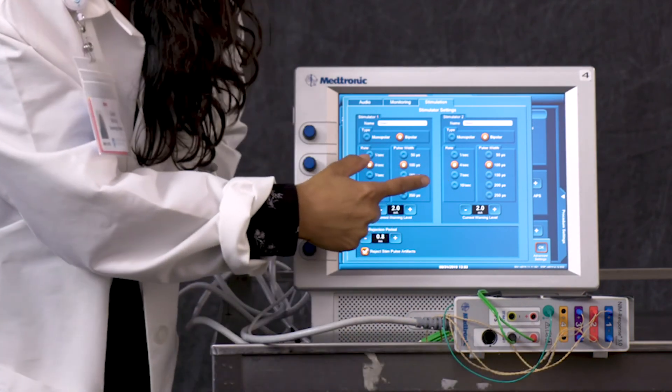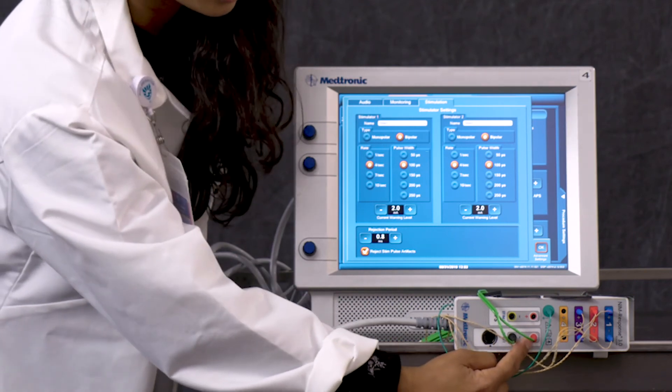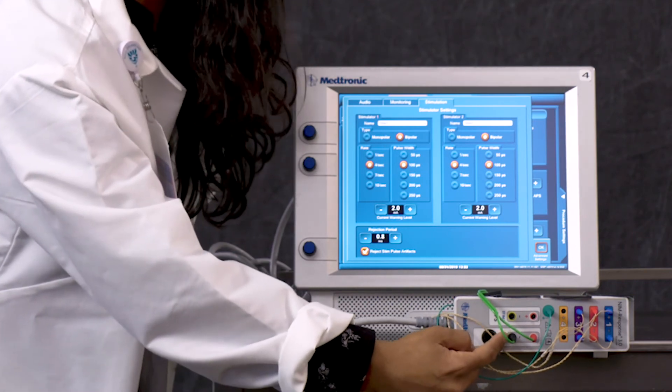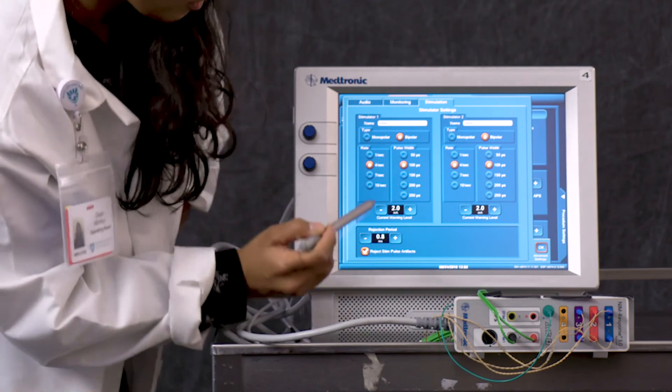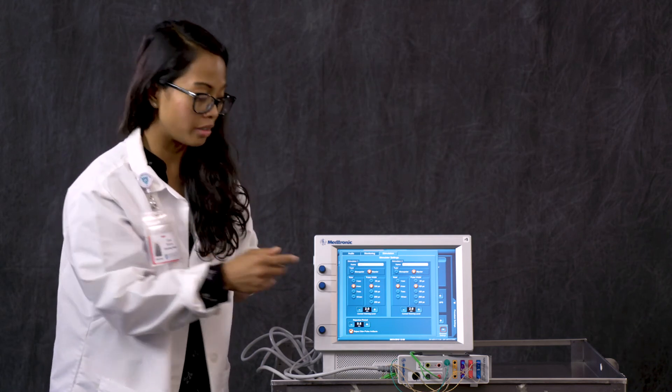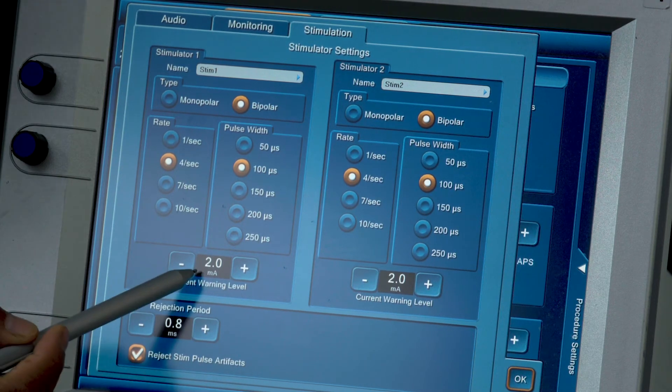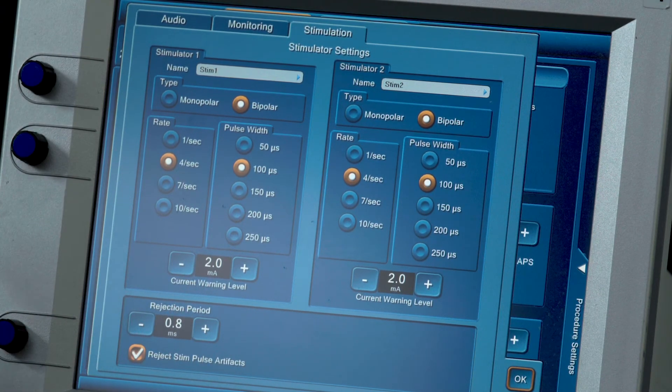For our warning level, what this means is with all the stimulation, there is a cutoff. The warning level, if the stimulator is set too high, it's at two milliamps. You'll get a dialog box. If the surgeon says, increase the stimulation to this, in this case we can't go any higher than 2.0 or two milliamps.